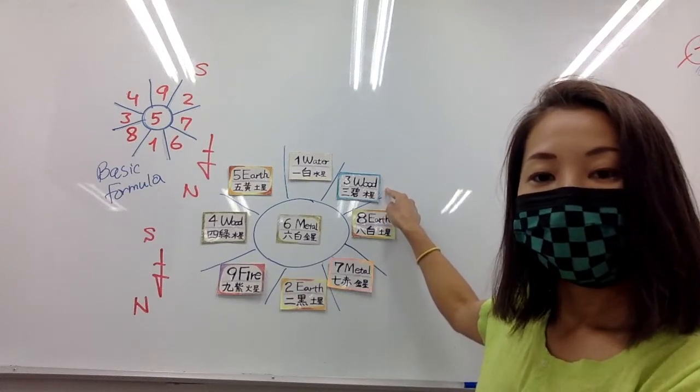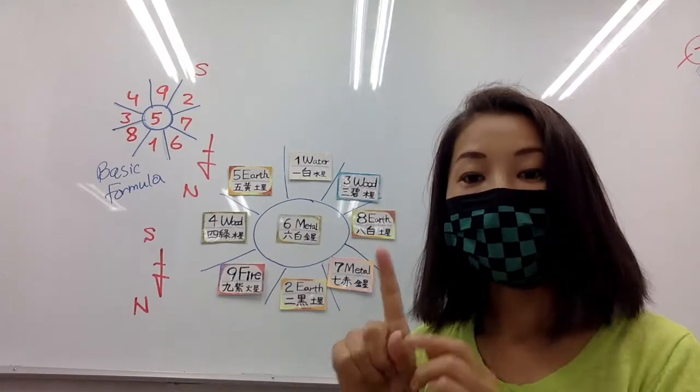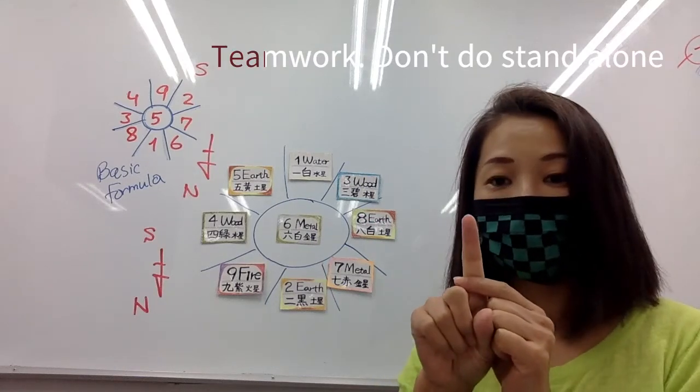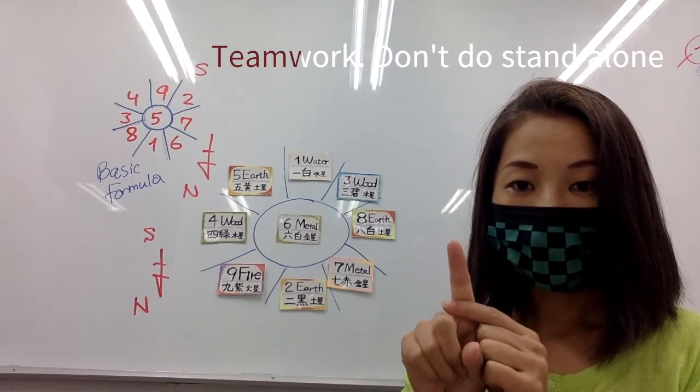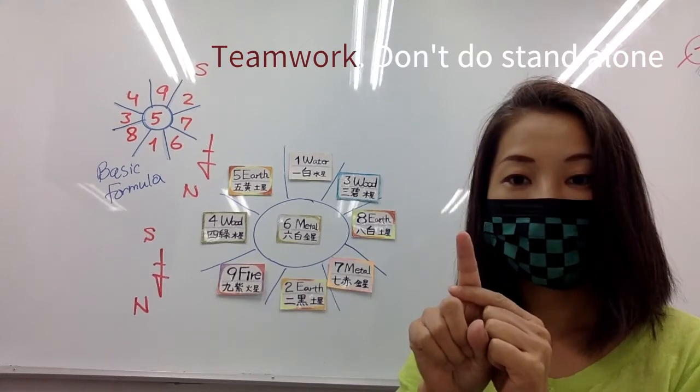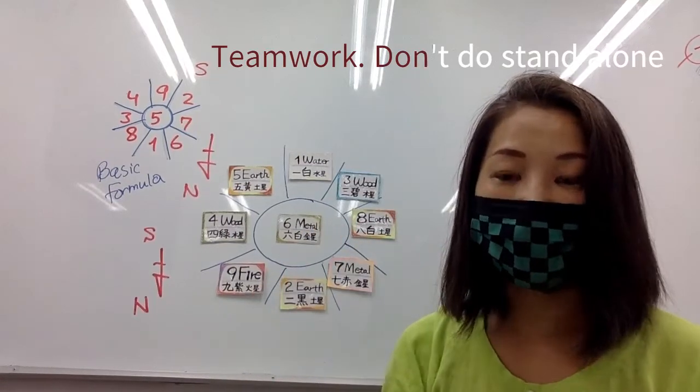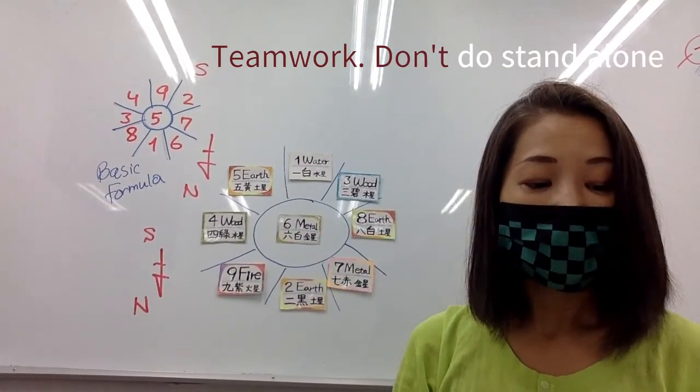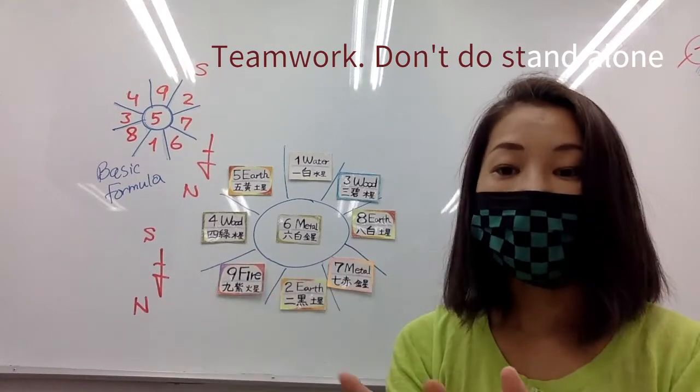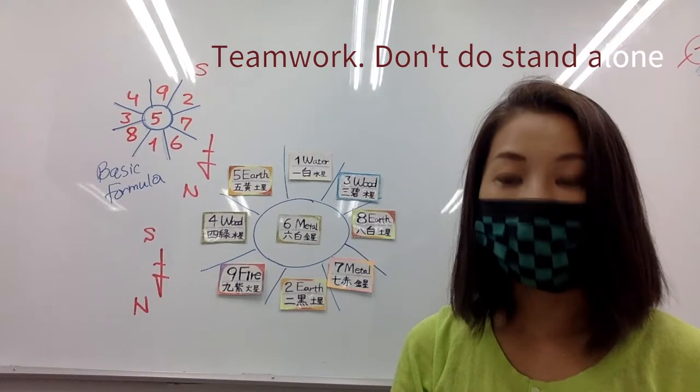July is the first good month, so you will have help from everyone. Everyone helps you, Sanpeki persons this month. The point is first teamwork. Don't stand alone, don't do it by yourself. Together with some people, make a team and then do something. Everyone helps you.